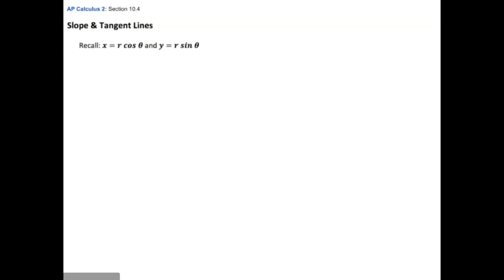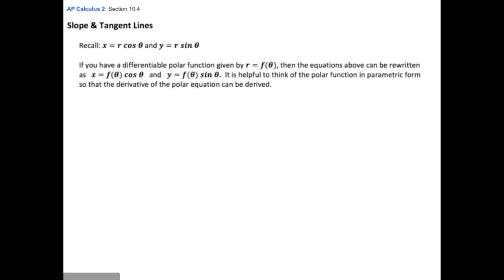If you have a function defined in polar format, so r equals f of theta, we're going to put that in for r. Your equation becomes x equals f of theta times cosine of theta, and y equals f of theta times sine theta. This is the parametric form of that polar equation.